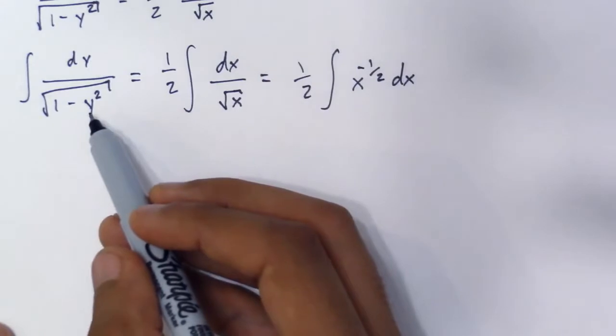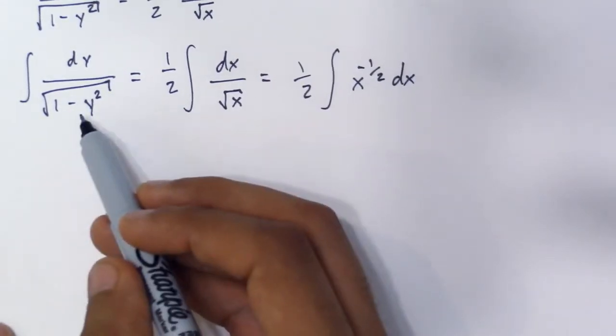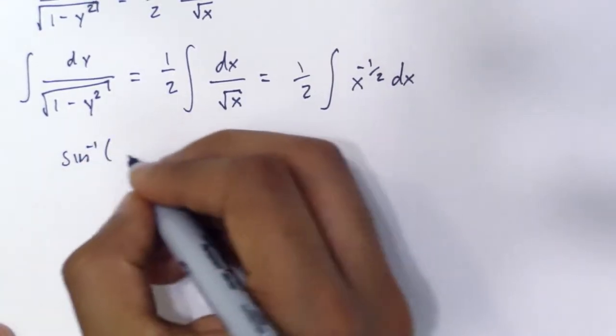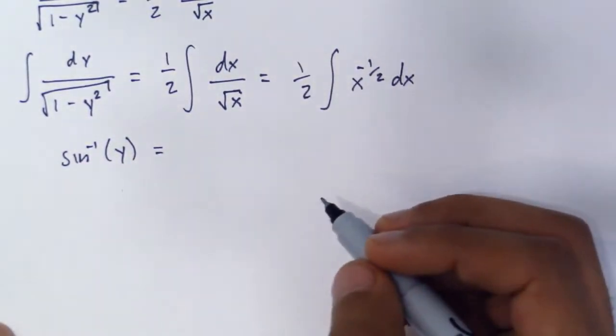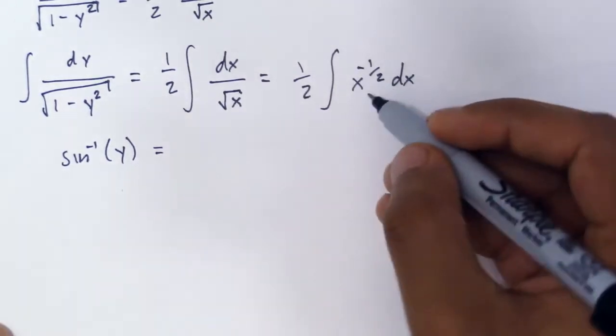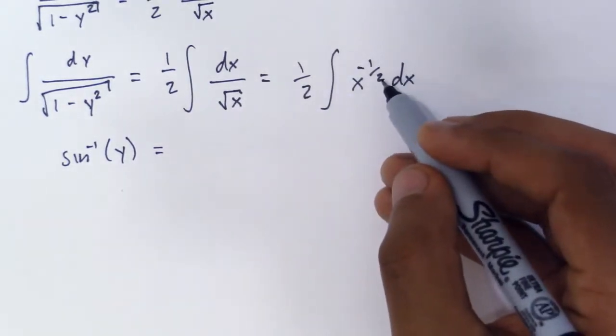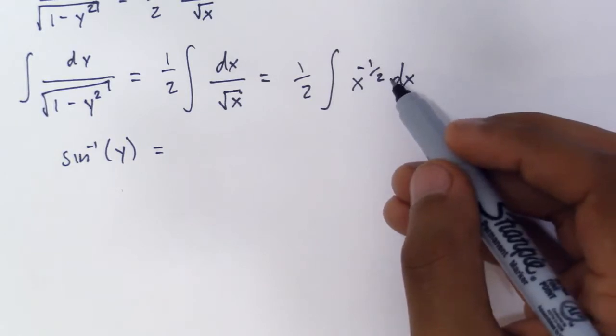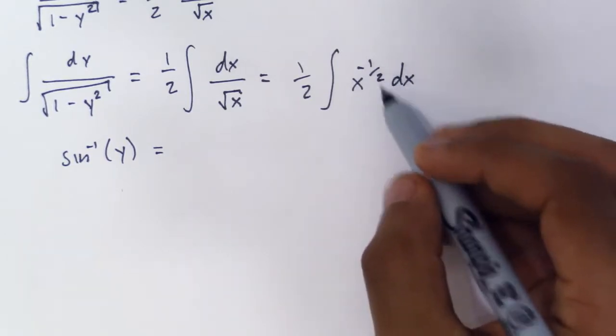So if you remember your identity for this integral, this equals sine inverse or arcsine of y, which equals you add 1 to the exponent, which is 1 half. If you add 1, that's 1 half.